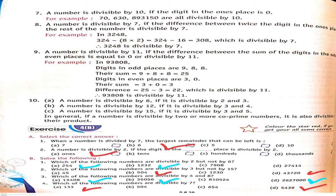Point 10 — a number is divisible by 6 if it is divisible by both 2 and 3. Similarly, a number is divisible by 12 if it is divisible by both 3 and 4. And a number is divisible by 15 if it is divisible by both 3 and 5.